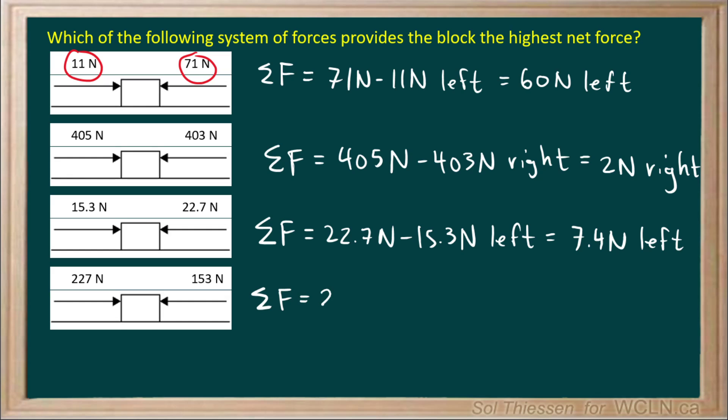In this case we have a net force to the right. 227 newtons to the right, 227 newtons minus 153 newtons is equal to 74 newtons and that's to the right.